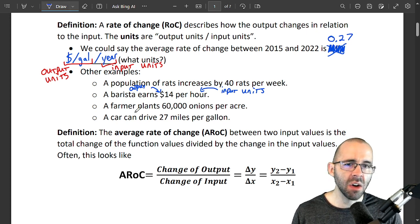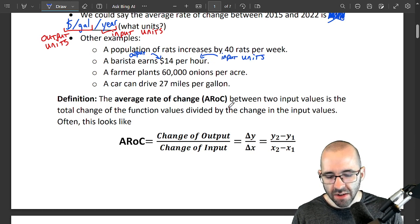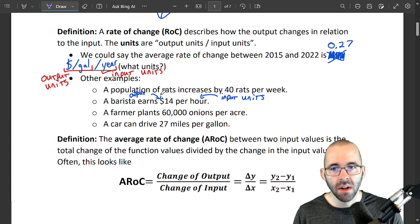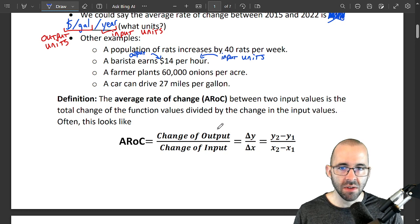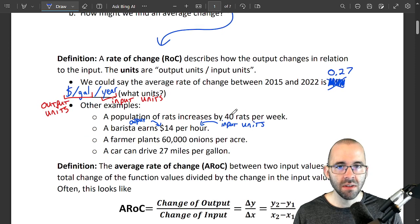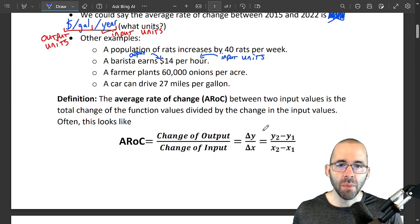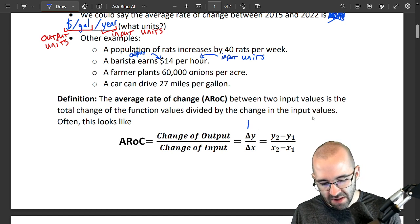Let's get into the definition, and then in the next video we'll do some more examples to make things a little bit clearer. The average rate of change—again, we talked about what a rate of change was. The average rate of change between two input values is the total change of the function divided by the change in the input values. That's going to look like: change of the output divided by the change of the input, just like rate of change.